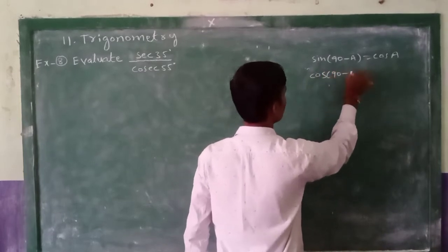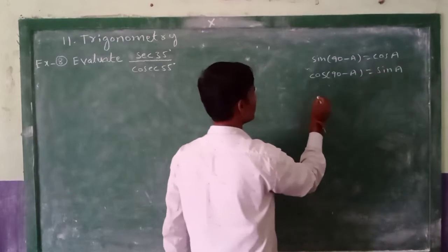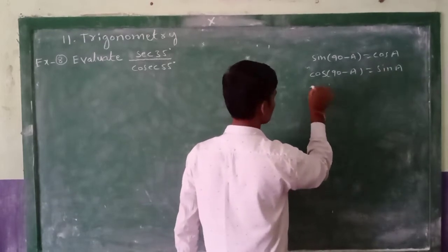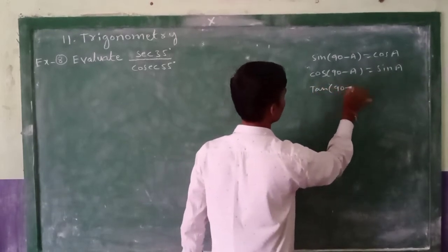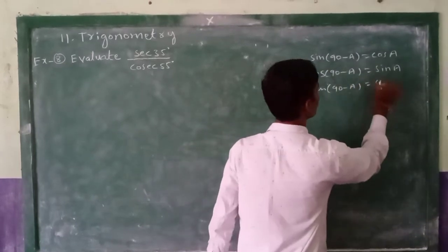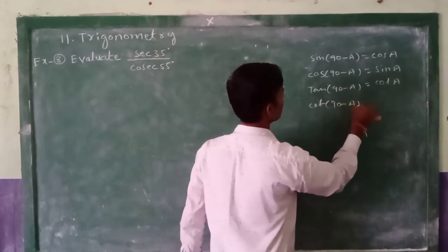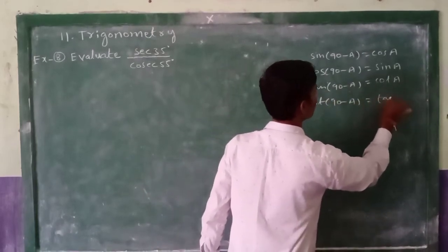Next, tan(90-a) = cot a, cot(90-a) = tan a